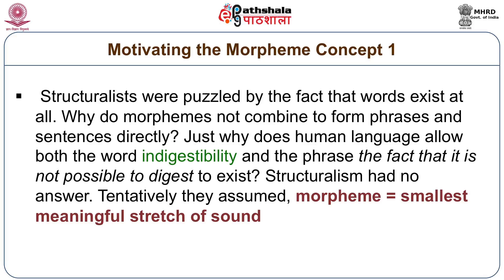Why did they fixate on the morpheme as an idea? The structuralists arrived at the morpheme because they were looking at minimal configurations. They thought of the phoneme as a minimal configuration of sound — a vowel or a consonant. Most ways of talking about pronunciation in the traditions of the world have postulated vowels and consonants, and it was fairly straightforward to put them together and construct a class of phonemes. Likewise, they felt that when words are chopped up into pieces, these pieces are basically of two kinds: roots and affixes. Just as vowels and consonants can be unified as phonemes, roots and affixes could be unified as morphemes. That was the basic idea.